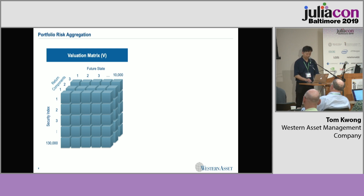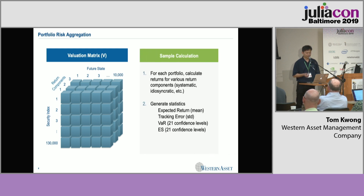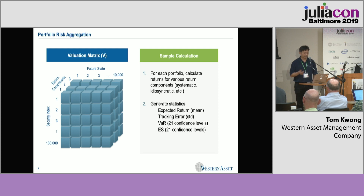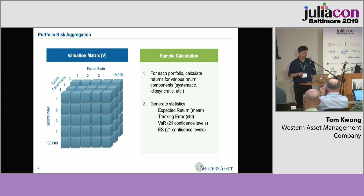The scale is about 130,000 securities that we have to evaluate every day across these 10,000 states. The output is pretty simple: we do risk statistics. You can get expected returns, which is really just the mean of the security returns, tracking errors, value at risk, and expected shortfall.